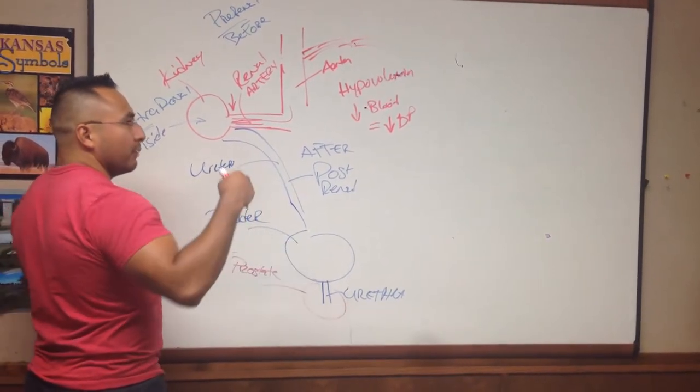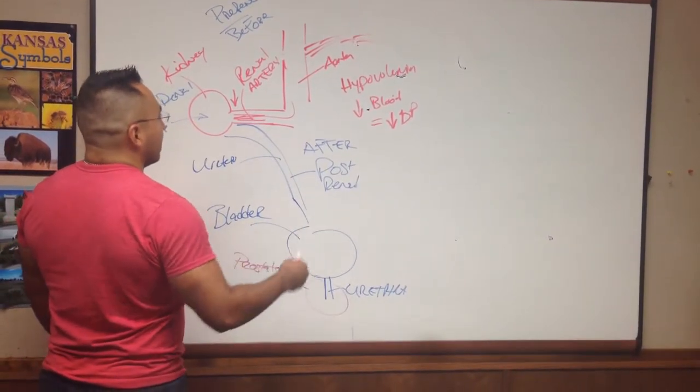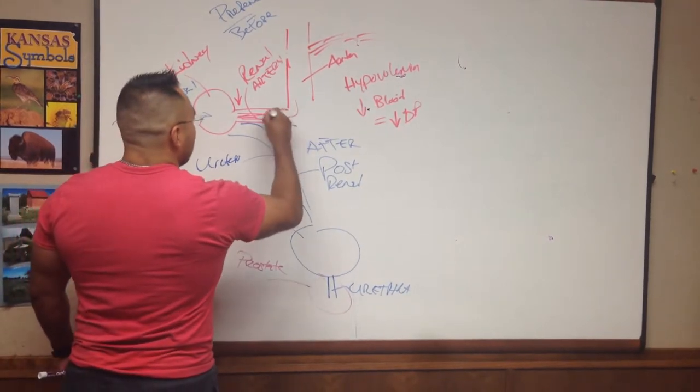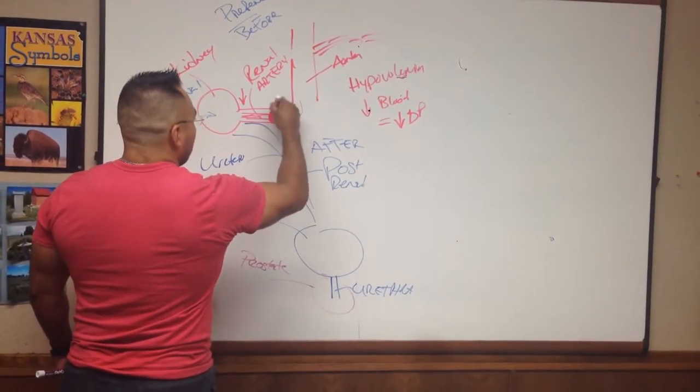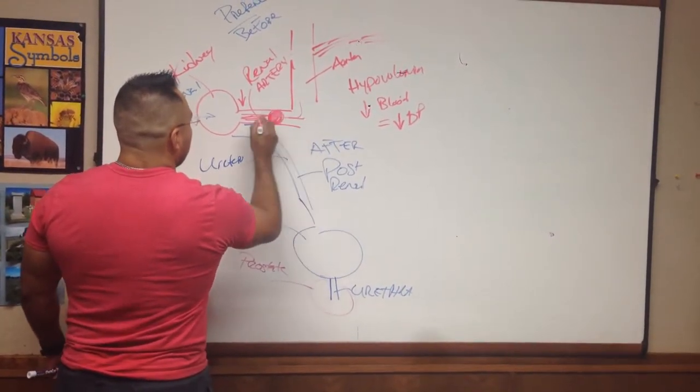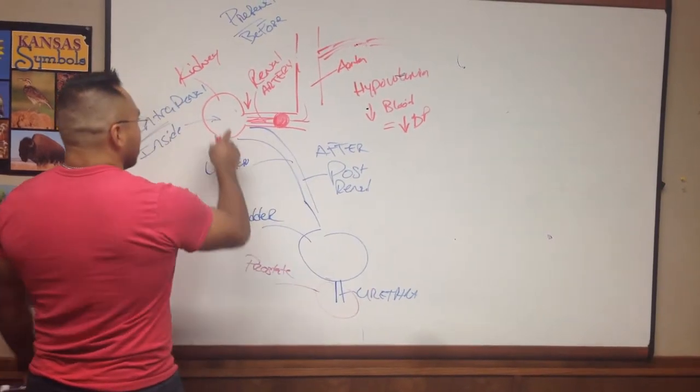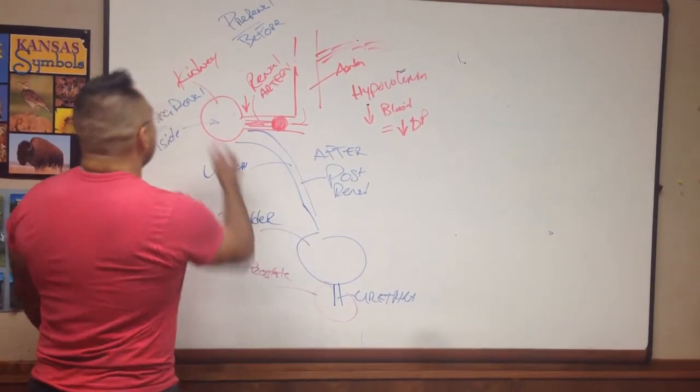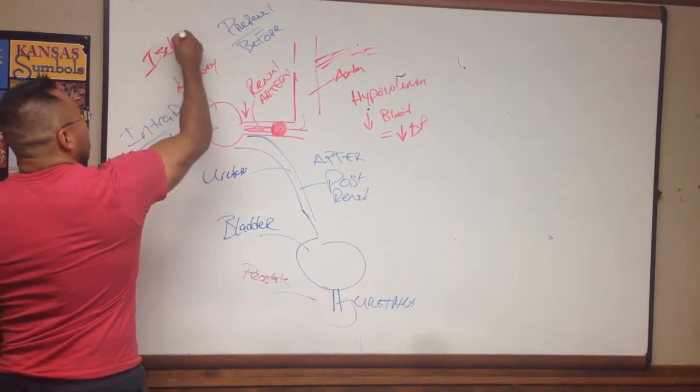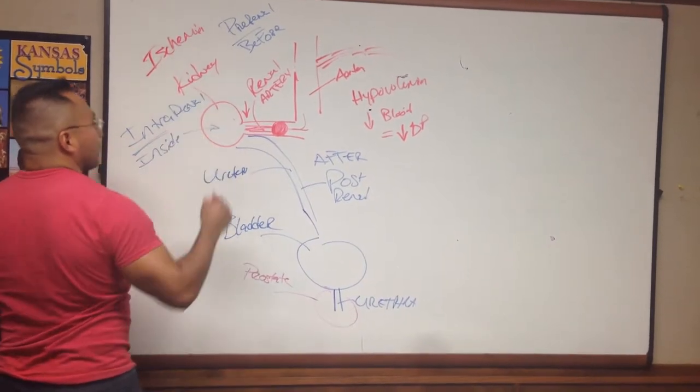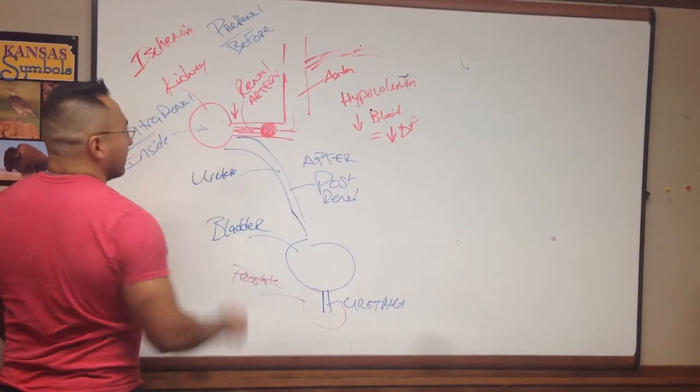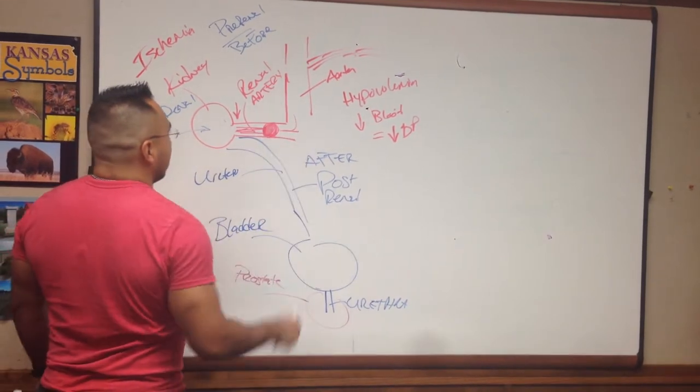Another thing that could happen is maybe you have a blood clot, an embolus. A blood clot gets here and occludes any blood from getting into the kidney. This would again result in renal ischemia or decreased oxygenation to the kidney. So that would be prerenal.